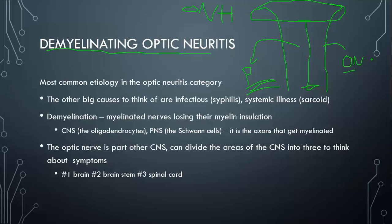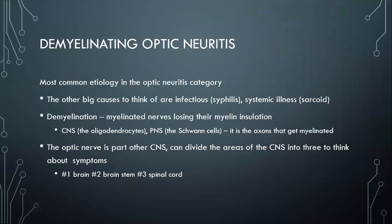So what demyelination is: it's myelinated nerves losing their myelin. In the CNS, the oligodendrocytes are the cells putting the myelin on, while in the peripheral nervous system it's the Schwann cells. The things getting myelinated are axons. The optic nerve is part of the CNS. When talking about demyelinating optic neuritis, we want to think about what diseases involve demyelination in the CNS.